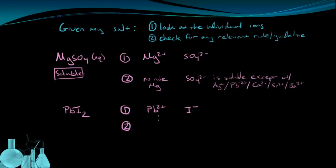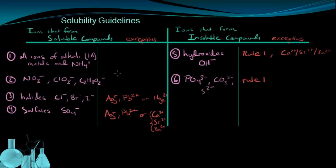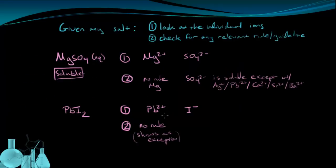So that's going to be the Pb2+ ion and the iodide ion. Next, I'm going to look for any relevant rules for either one of these ions. Let's start by looking for Pb. If I look through my list of rules, I'm not going to see Pb show up in either the soluble or insoluble list.